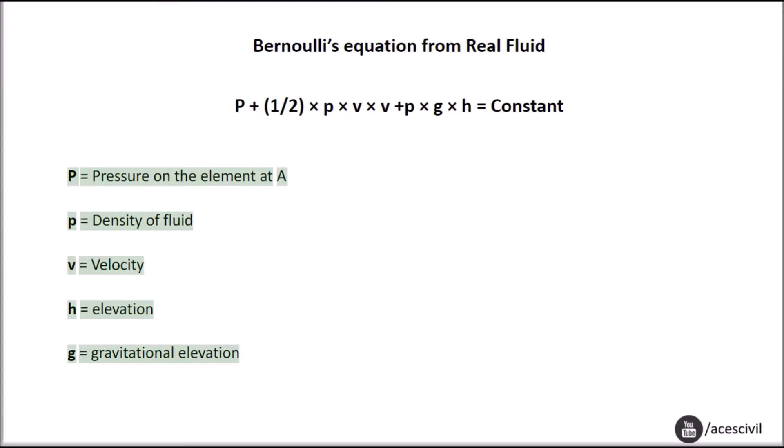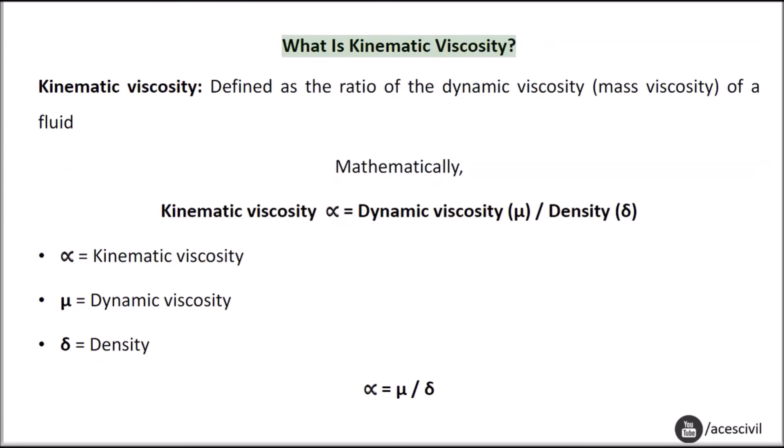What is Kinematic Viscosity? Kinematic Viscosity is defined as the ratio of the Dynamic Viscosity to the mass density of a fluid. Mathematically, Kinematic Viscosity ν equals Dynamic Viscosity μ divided by density ρ.